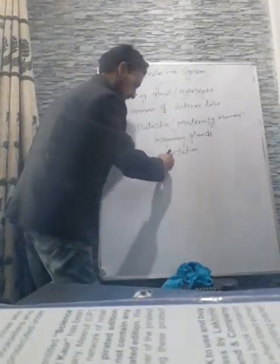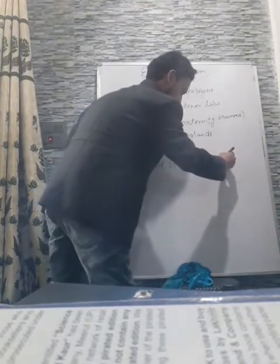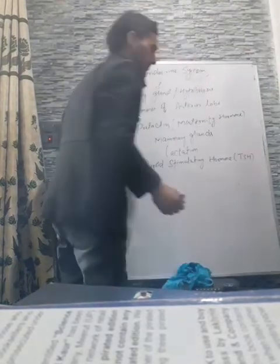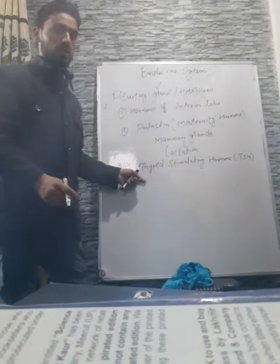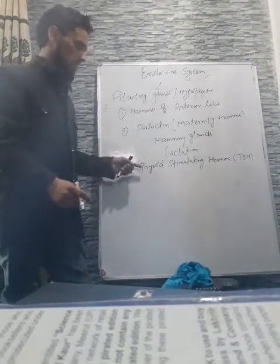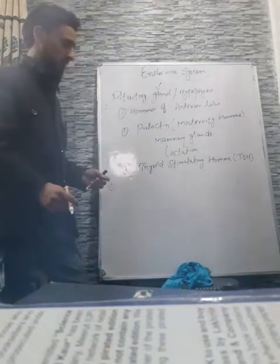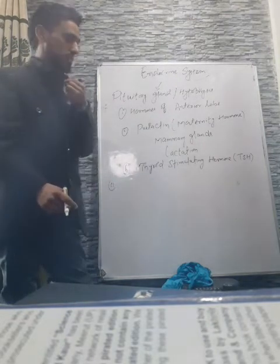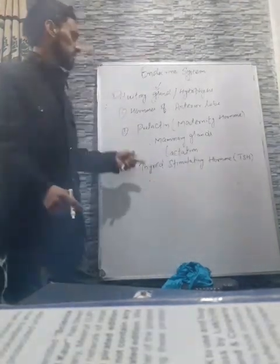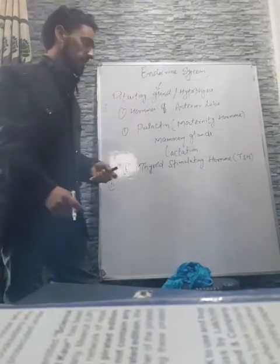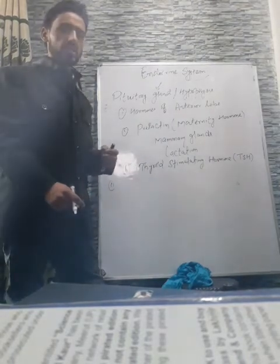The last hormone secreted by the anterior lobe of the pituitary gland is Thyroid Stimulating Hormone, or TSH. This hormone stimulates the thyroid gland to produce and release its hormones. Without TSH, the thyroid gland cannot secrete its hormones. The thyroid gland, located in the throat region, receives information in the form of TSH secreted by the anterior lobe of the pituitary gland into the blood. That concludes the hormones of the anterior lobe of the pituitary gland.